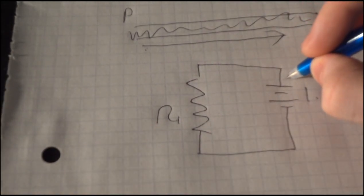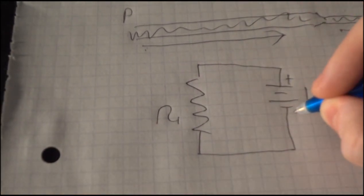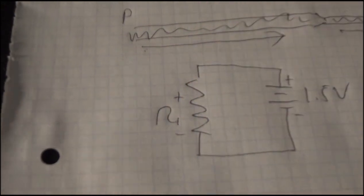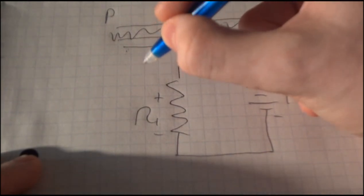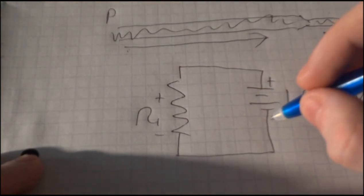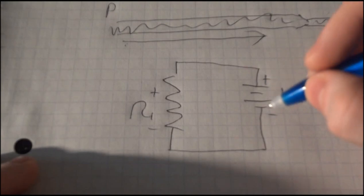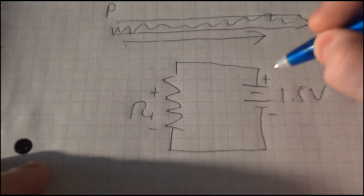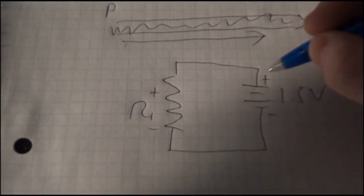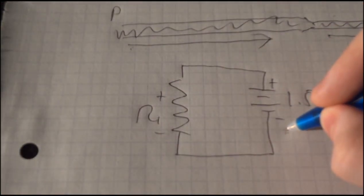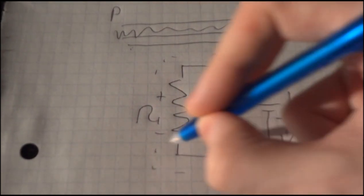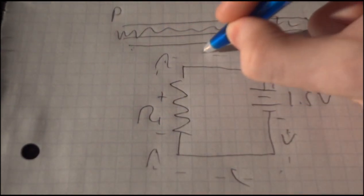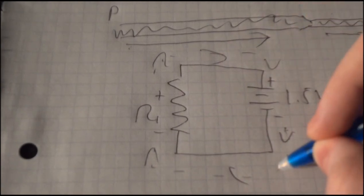And again, we'll also give signs to these signs. Because by giving these signs, we're designating the way the current flows, but also the way electrons flow. Now electrons are negatively charged particles and they're always attracted to positive particles. So your electron flow will always go in this direction.